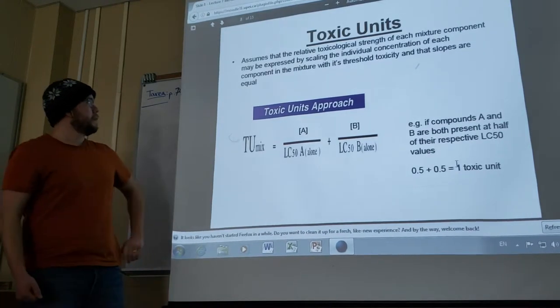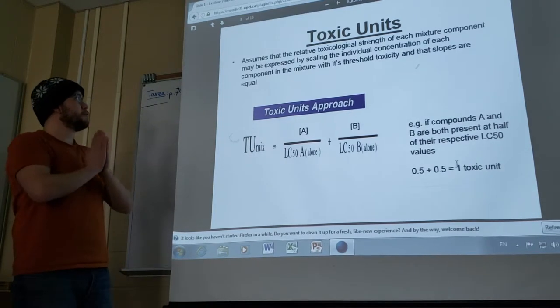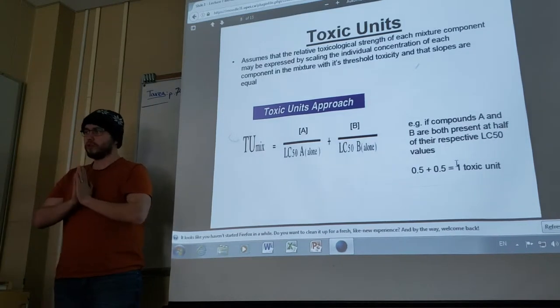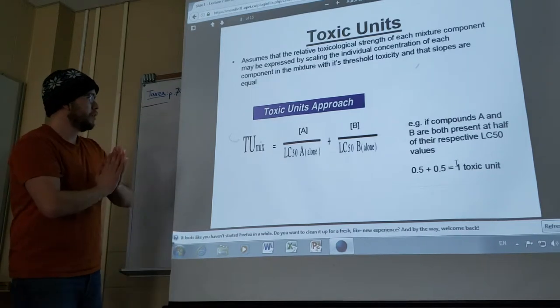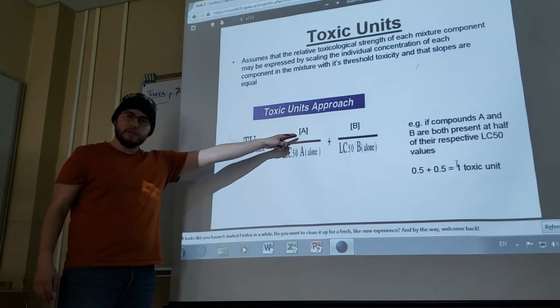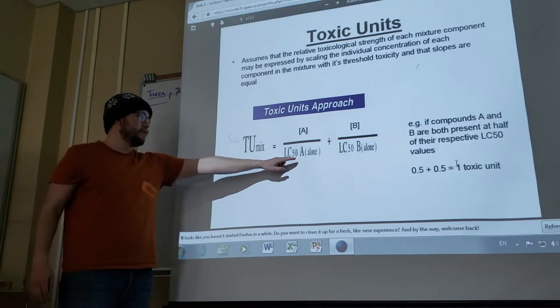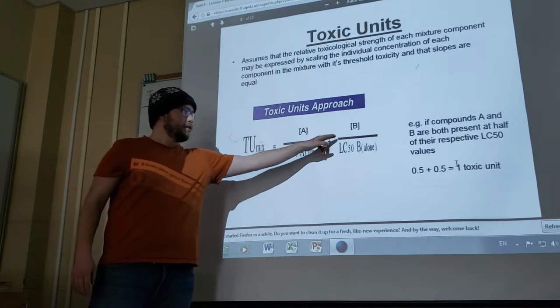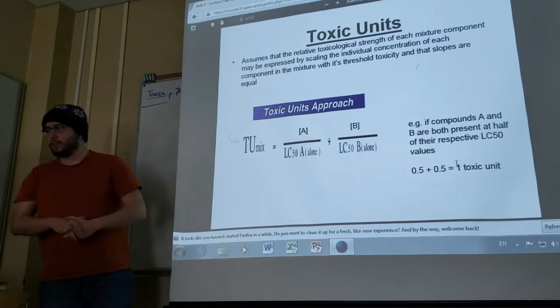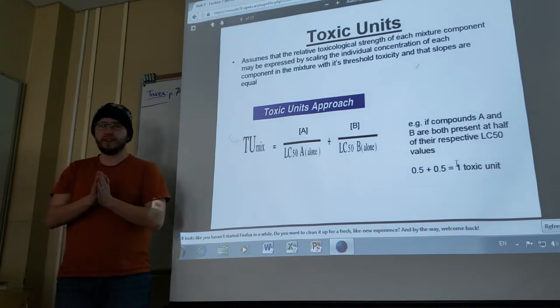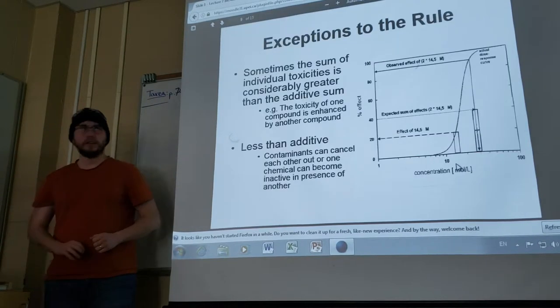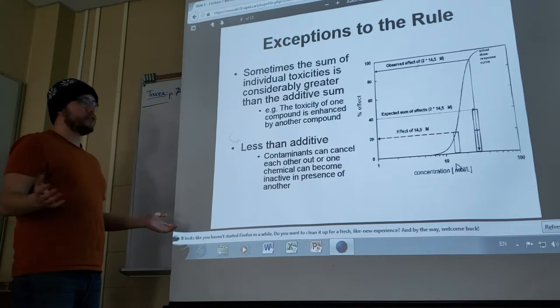Toxic units assumes that the relative toxicological strength of each mixture component may be expressed by scaling the individual concentration of each component in the mixture with its threshold toxicity and that slopes are equal. The equation: the toxic units of a mixture are equal to the concentration of component A divided by the LC50 of A by itself, added to the concentration of B divided by the LC50 of B by itself. In other words, if compounds A and B are both present at half of their respective LC50 values, 0.5 plus 0.5 equals one toxic unit.